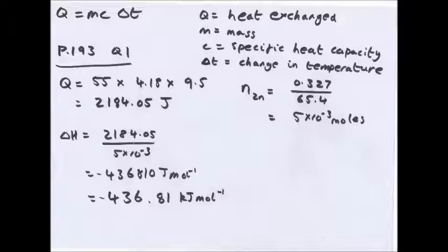For q = mcΔT: q is the heat exchanged; m is the mass of the surroundings involved in heat exchange — usually the liquid; c is the specific heat capacity, which is the energy required to raise the temperature of one gram of substance by one degree Celsius. For water, which you will always use, c = 4.18 J/g/K. Delta T is the change in temperature. You can calculate q, then divide by moles to get enthalpy change. q is in joules; delta H is in kilojoules per mole, so divide by 1000.